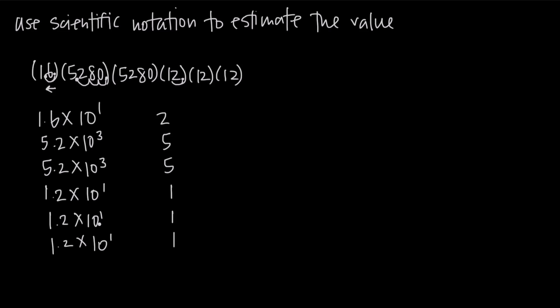And then we have all these powers of 10. So because all these things are multiplied together, we want to multiply all of these values together. So 2 times 5 is 10. 10 times 5 is 50. 50 times 1 times 1 times 1 is still 50.